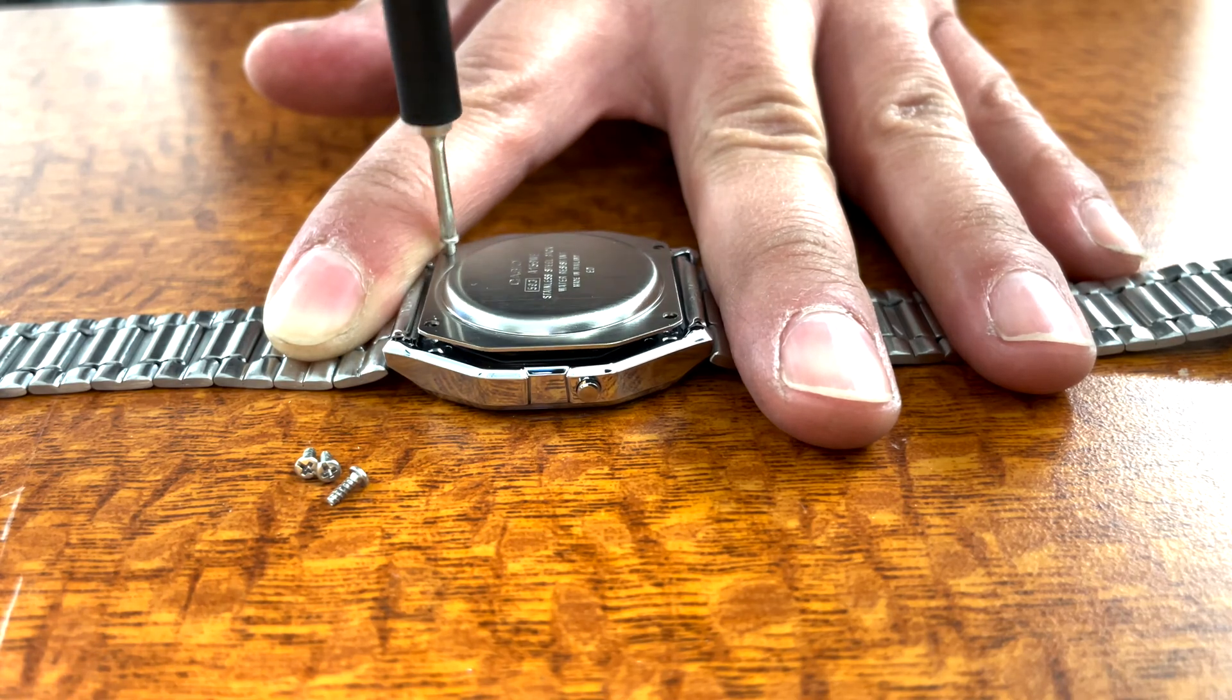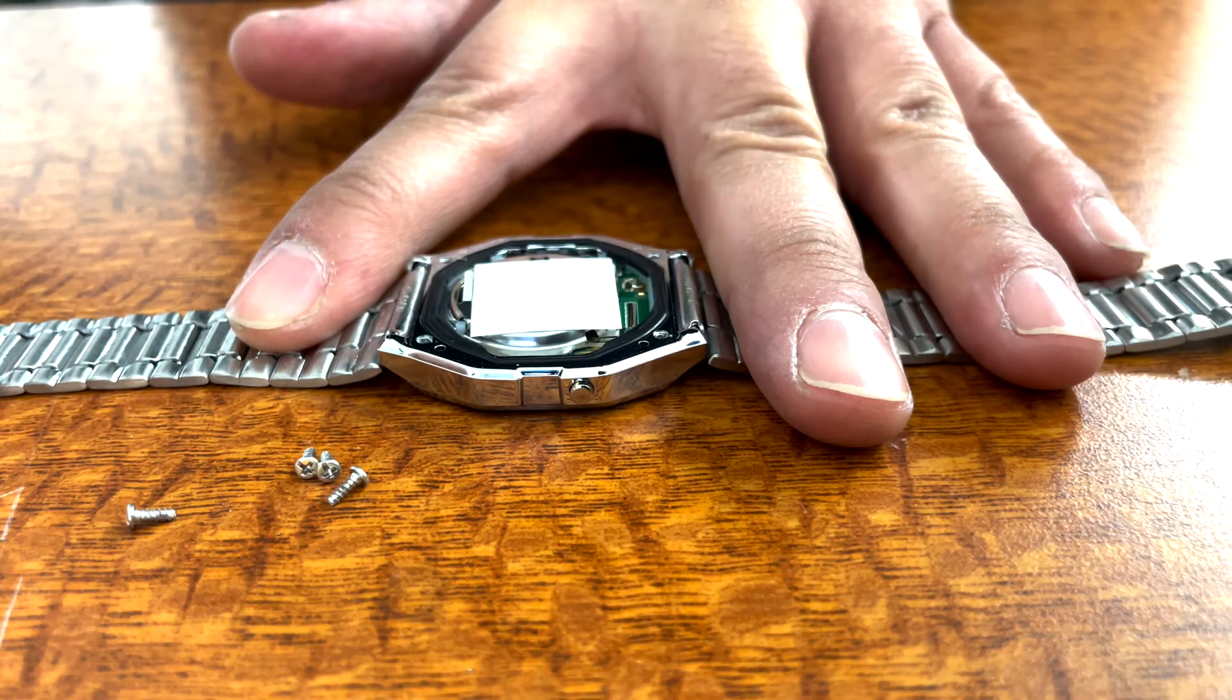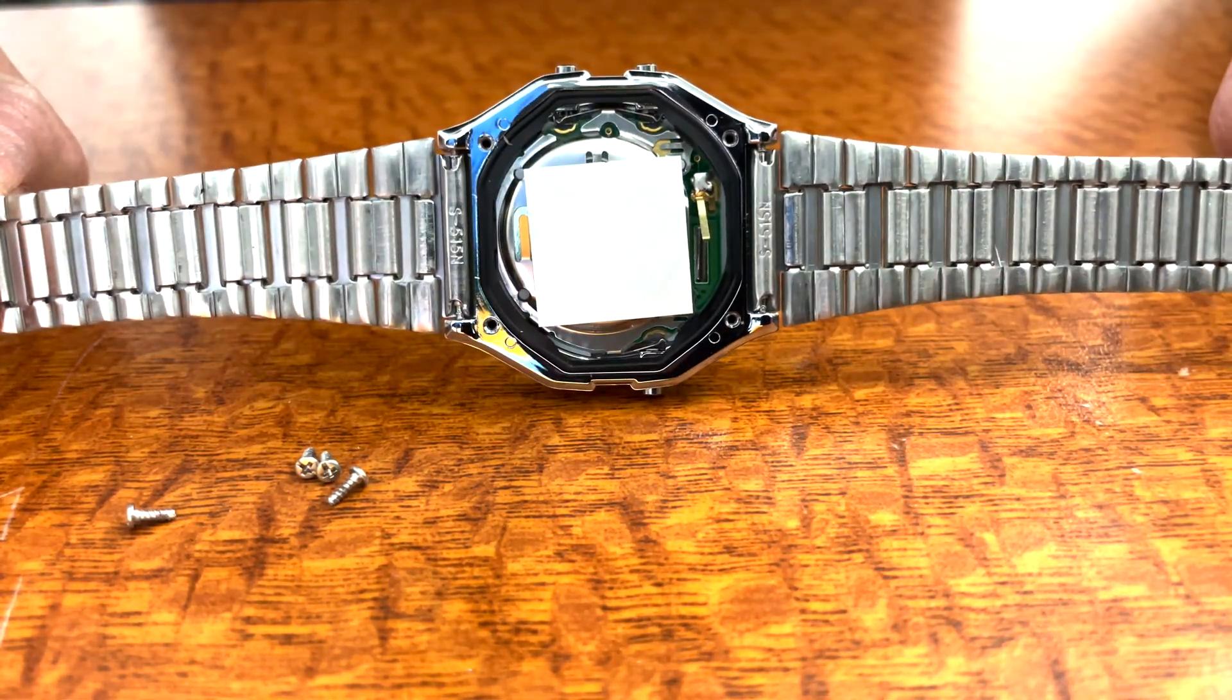With all four screws removed, we can now remove the back plate and expose the inside of the wristwatch. Here you can see the green circuit board that is the quartz movement, as well as a black rubber gasket.